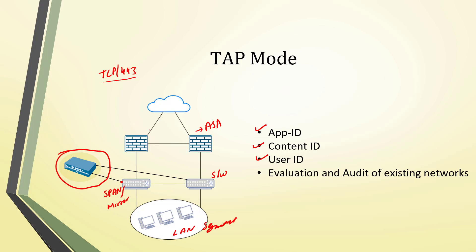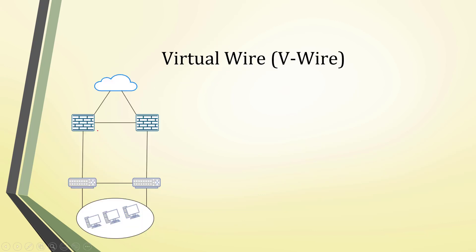You can use TAP mode for a proof of concept where Cisco ASA is running. Typically seven to ten days of traffic is needed to identify all applications and threats traversing the network. After that, you generate a core dump file from the firewall's support option, upload it to the support portal, and it generates a report showing applications, threats, and more — which you can showcase to the customer to demonstrate Palo Alto Networks firewall features.